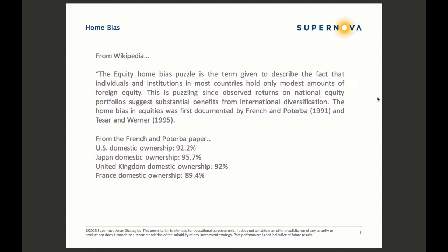The equity home bias puzzle is the term given to describe the fact that individuals and institutions in most countries hold only modest amounts of foreign equity. This is puzzling, since observed returns on national equity portfolios suggest substantial benefits from international diversification.